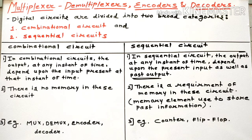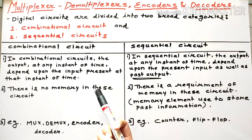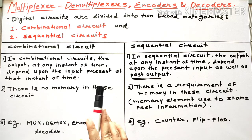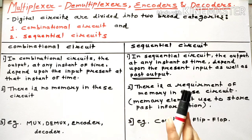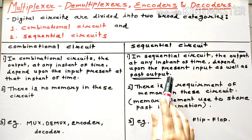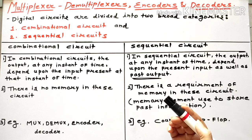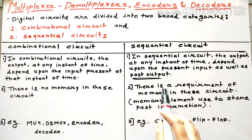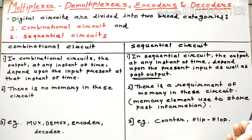Because of this dependency on past information, there is a requirement of memory in sequential circuits to store that past information. In case of a combinational circuit, there is no requirement of memory. But in case of a sequential circuit, there is a requirement of memory to store the past information. Clear?